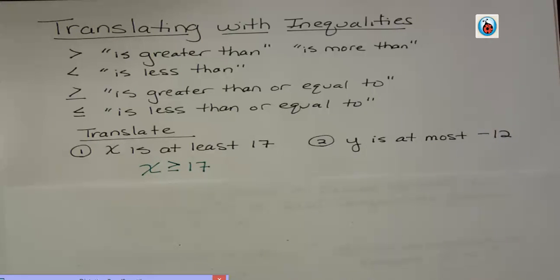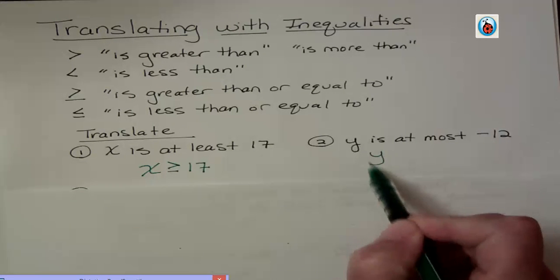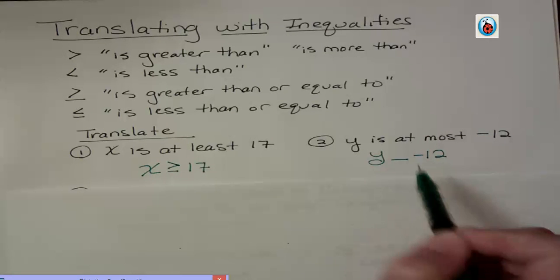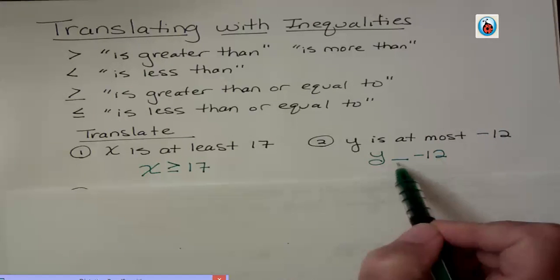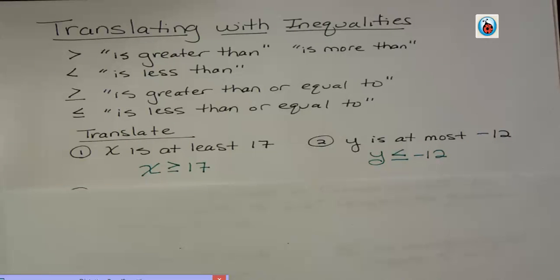Now number two, y is at most negative 12. So if you have something that's at most negative 12, that means it could be exactly negative 12, the equal to part, but it could also be anything less than that. At most means that's the biggest thing it could possibly be, or the greatest thing that it could possibly be.